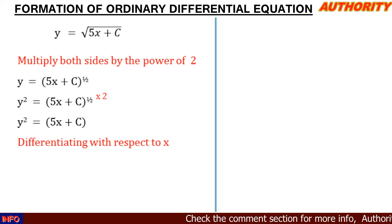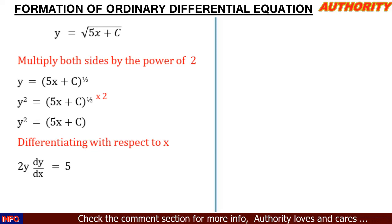So when we differentiate it as if it is x, it's going to give us 2y, then multiply by dy/dx, equals... On the right-hand side, when we differentiate 5x, it gives us 5, and when we differentiate C, it gives us 0.